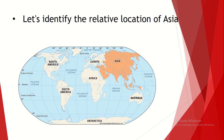To the east of Asia we can see the Pacific Ocean, and to the west of Asia we can see the continent of Europe. You can clarify this if you use an atlas book.